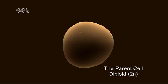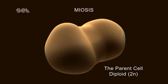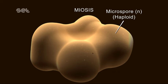Within each pollen sac there are many parent cells containing diploid, that is 2N, number of chromosomes. Each parent cell produces four haploid N daughter cells called microspores through meiosis.